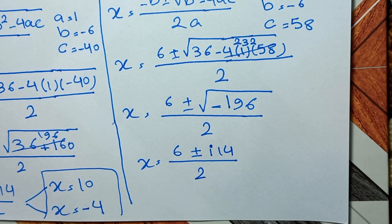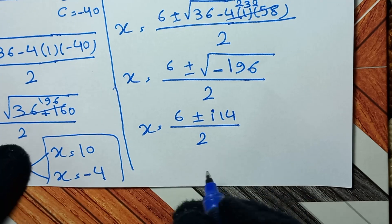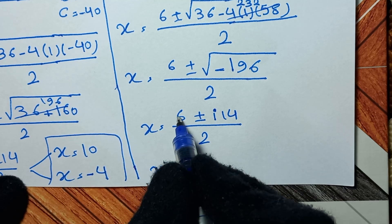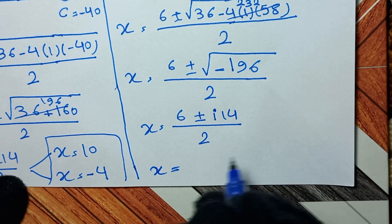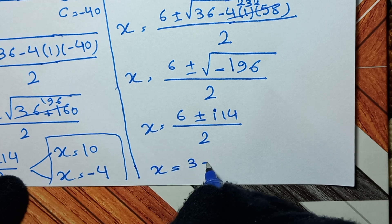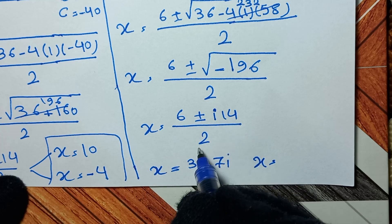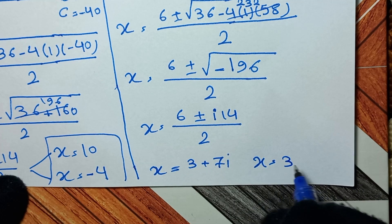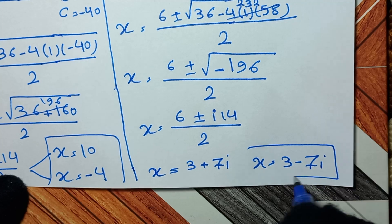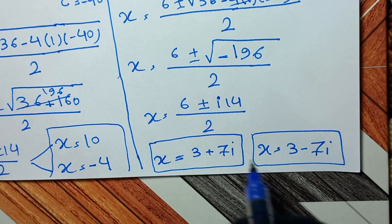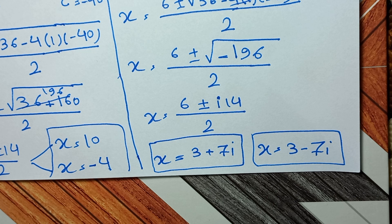So x equals (6 plus 14i) over 2, which is 3 plus 7i, and x equals (6 minus 14i) over 2, which is 3 minus 7i. We have four answers for x in total, and this is our final answer. Thank you for watching — don't forget to like and subscribe, and see you in the next video. Goodbye!